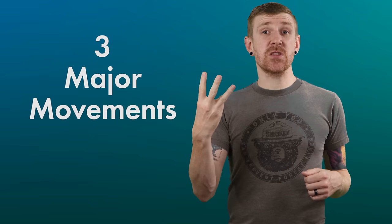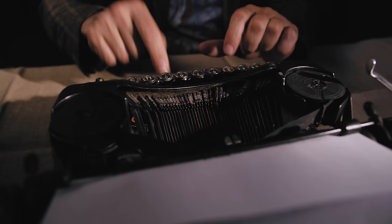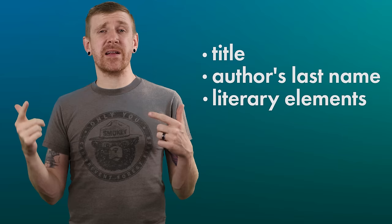Okay, let's start with the basic thesis structure. In general, the best template for responding to any literary prompt contains three major movements. The first movement contains the title of the piece you're discussing, the author's last name, and any literary or poetic devices that you're going to be discussing in your paper, but those have to be based on the prompt that you're actually responding to.